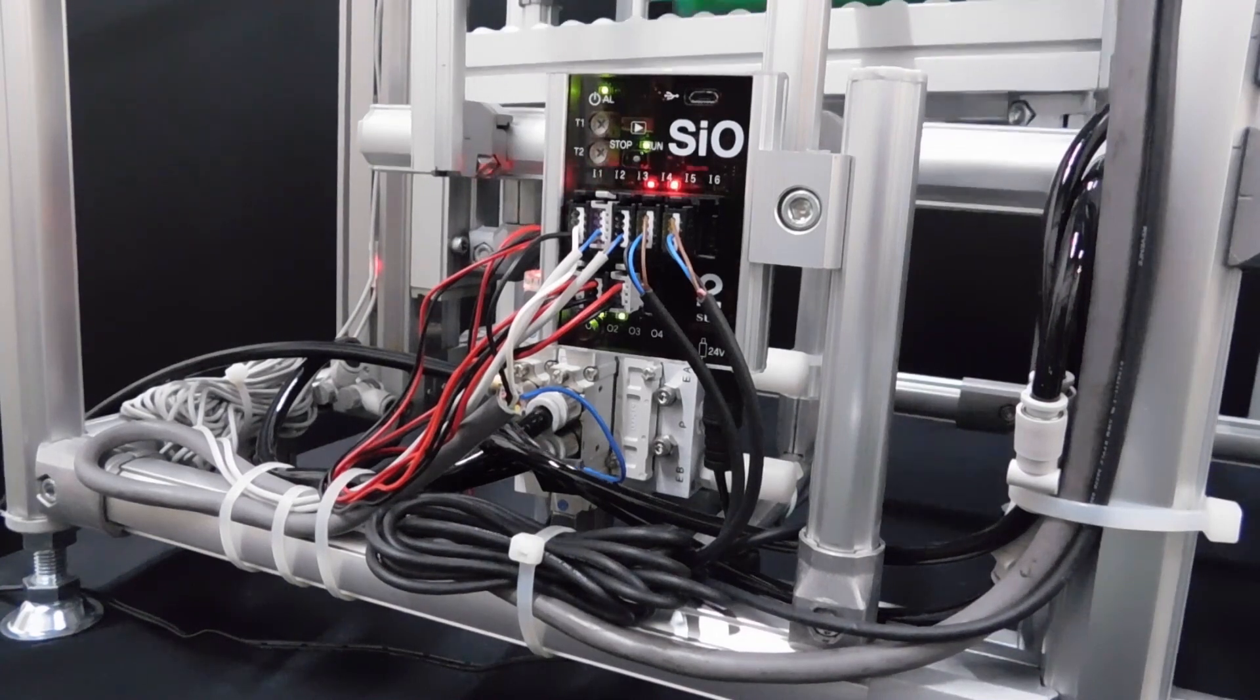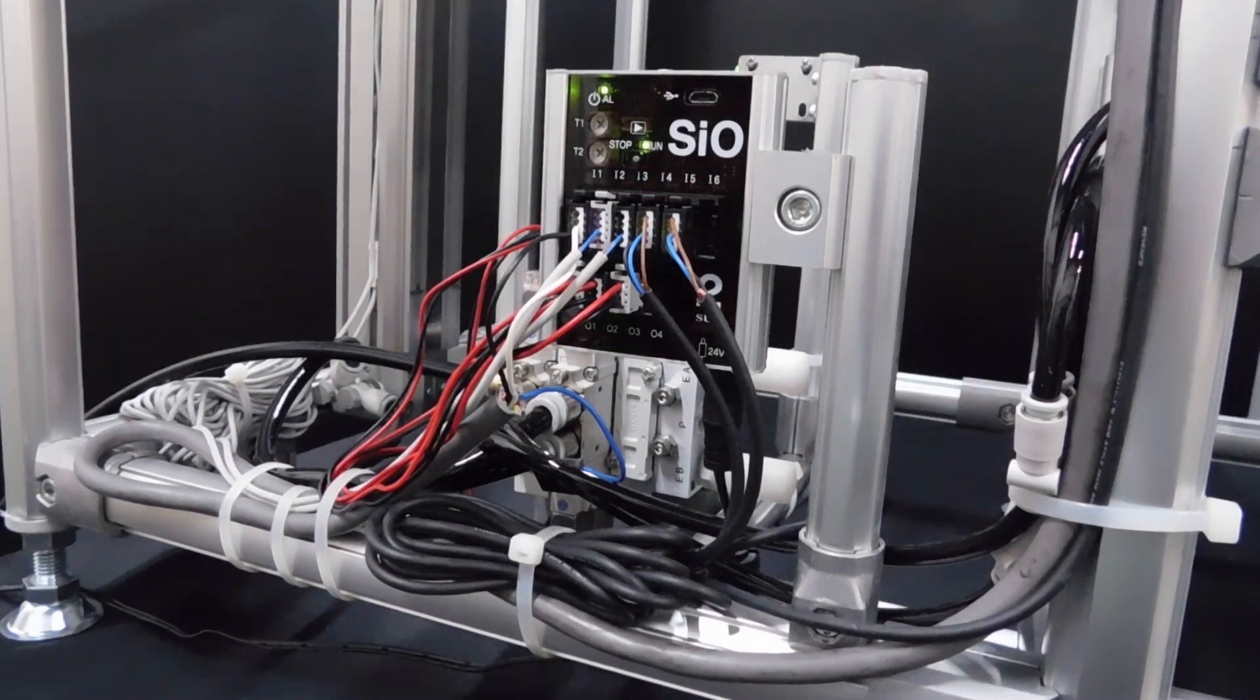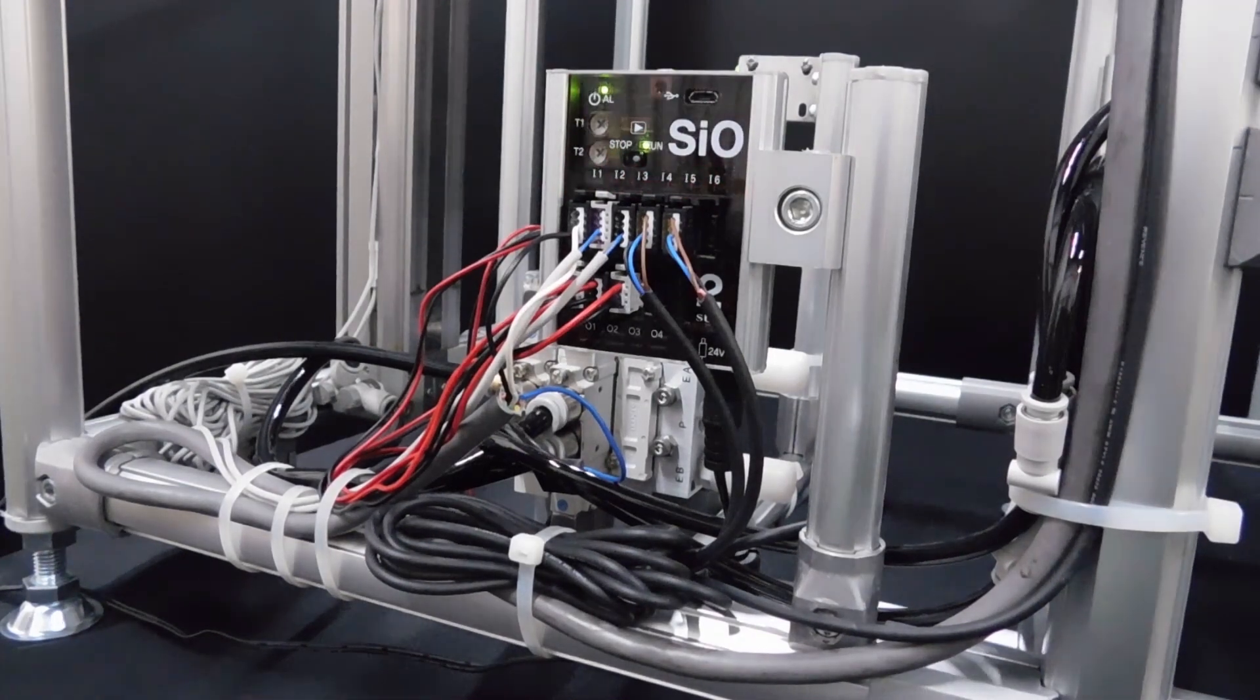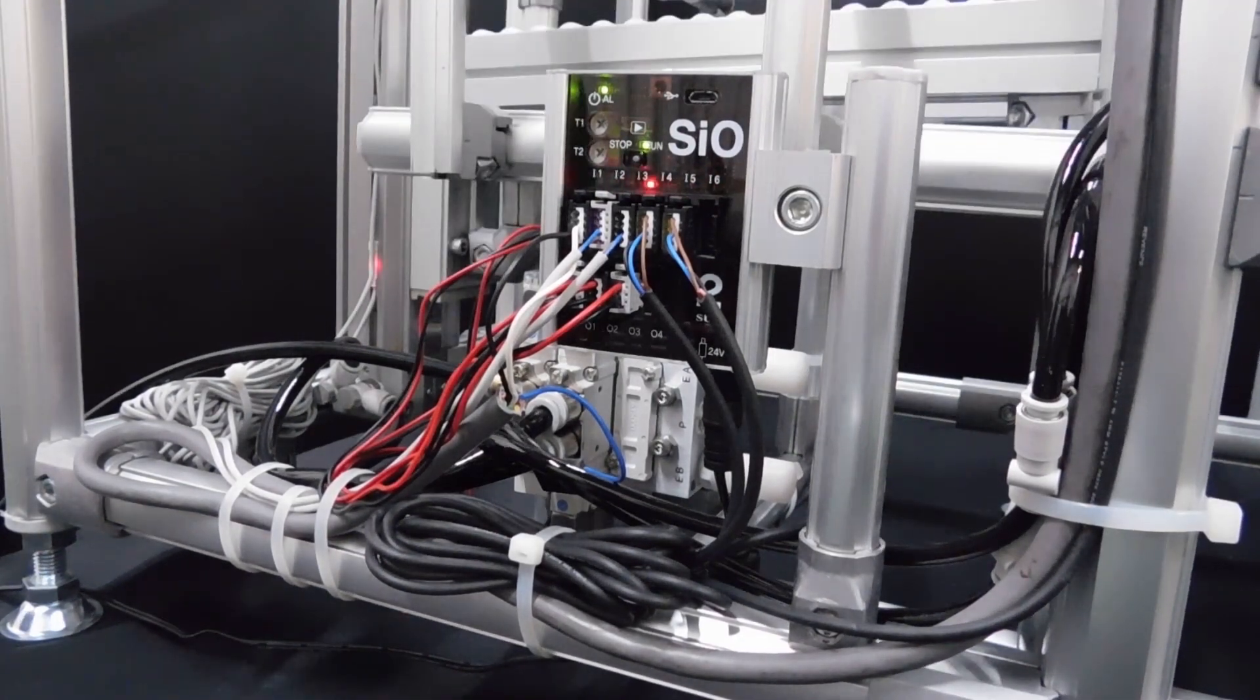The outputs from left to right are the single solenoid for the stopper, the double solenoid for the lifter to move up, and another one for it to move down.